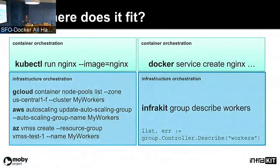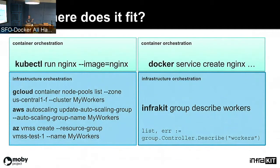In terms of UX, you can think of InfraKit as the equivalent of a tool that allows you to operate on infrastructure. Using the example of a public cloud — running on GKE, AWS, or Azure — you typically operate things using kubectl or Docker CLI for services and containers, but when dealing with nodes and resources you use a different CLI such as GCloud, AWS CLI, or the Azure CLI. InfraKit has a CLI that essentially provides that role.